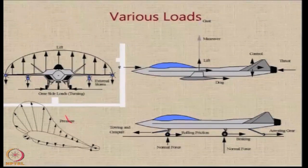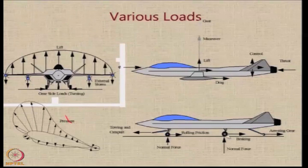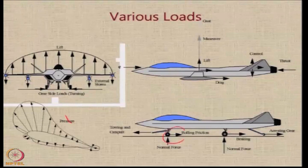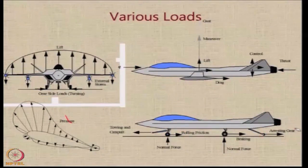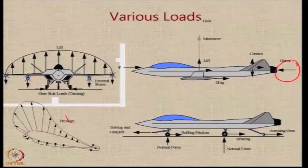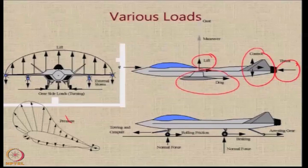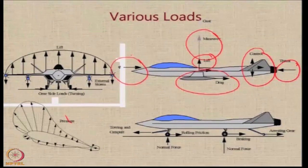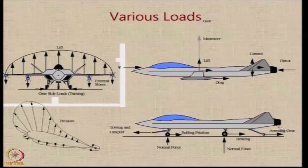When the aircraft is on the ground, there are loads because of towing and catapulting. There will be normal forces on the landing gear during landing — both main and nose gear. Braking loads act on the main landing gear when reducing landing distance. Rolling friction acts on wheels during takeoff. There are loads from the arresting gear on naval carriers, from engine thrust, from control forces, from lift overcoming weight, from drag, from maneuver load factors, and from dynamic pressure during flight.